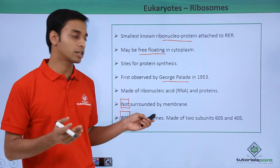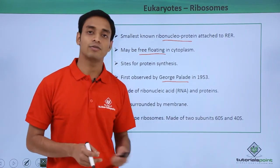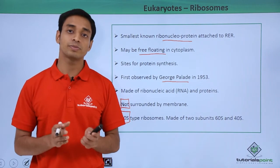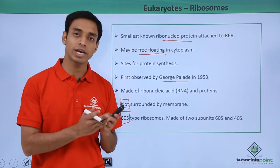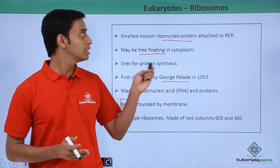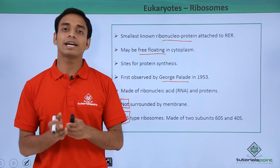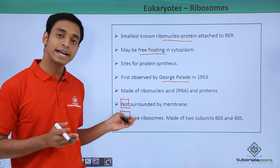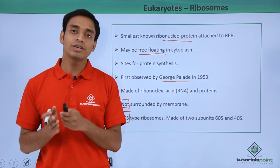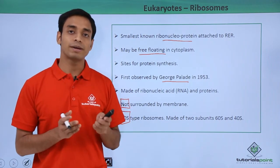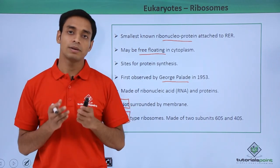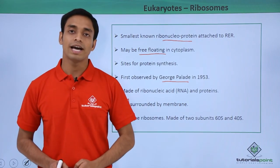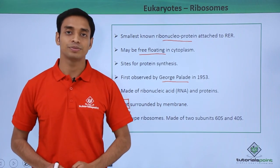In this video we have talked about a cellular organelle present in both prokaryotes and eukaryotes — the ribosomes. The eukaryotic ribosomes are quite different from those of prokaryotes; eukaryotic ribosomes are 80S type. We have discussed the ribosomes and their different functions in eukaryotic cells. I hope you have understood — please like this video, thank you.